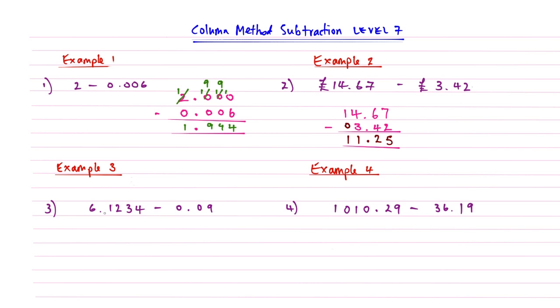Question three: 6.1234 subtract 0.09. Get these lined up. So 6.1234 take away 0.09. 0, that's my units, and it really does pay to be mindful of how you're lining up your digits. 0, 9, so that's 9 hundredths. Lines underneath to keep our working out nice and straight. We've got nothing underneath here, so 4 subtract nothing is 4, 3 subtract nothing is 3. You can put your zeros in to make it easier.